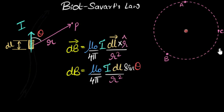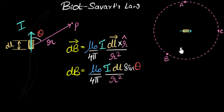Now replace this charge with a current element — a tiny piece of wire carrying current. I ask again: where would the magnetic field be higher? Would it be the same everywhere? Look at the sine(θ) term, and think about where the angle theta between the current direction and r would differ.